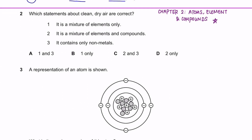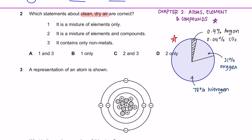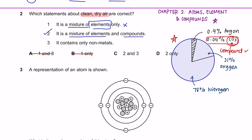Question 2 onwards is from Chapter 2. Which statements about clean dry air are correct? This here is the composition of air. Statement 1 says it is a mixture of elements only — this is not correct because 0.04% of dry air is made up of carbon dioxide, which is not an element but a compound. So we can cancel any option containing statement 1. Statement 2 says it is a mixture of elements and compounds — this is correct. Statement 3 says it contains only non-metals: argon, carbon dioxide, oxygen, and nitrogen are all non-metals, so statement 3 is also correct. The answer is C.